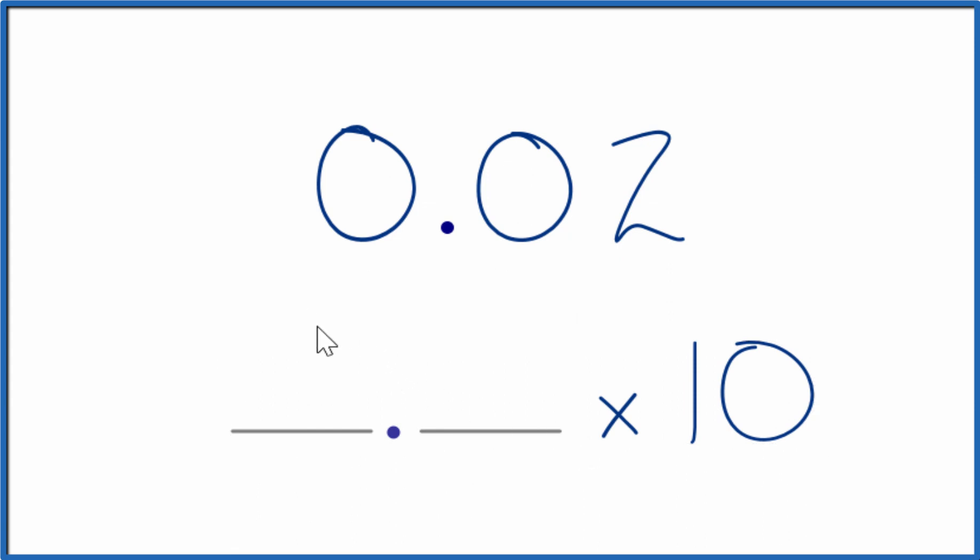So this is scientific notation where we have a whole number followed by a decimal times 10 to the sum power. And we'll figure the power out using our number 0.02 here.